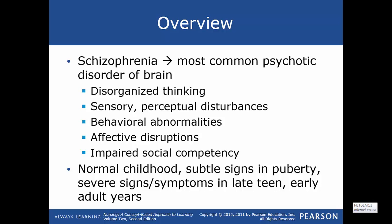Schizophrenia is the most common psychotic disorder of the brain. Its features are disorganized thinking, which makes clear thoughts and decisions difficult; sensory and perceptual disturbances, which complicates inner interpretation of reality; behavioral abnormalities that can cause difficulty in social interactions; and affective disruptions and impaired social competency. They often have a more normal childhood with subtle signs starting to appear in puberty, and severe signs and symptoms starting in late teens and early adolescent years.